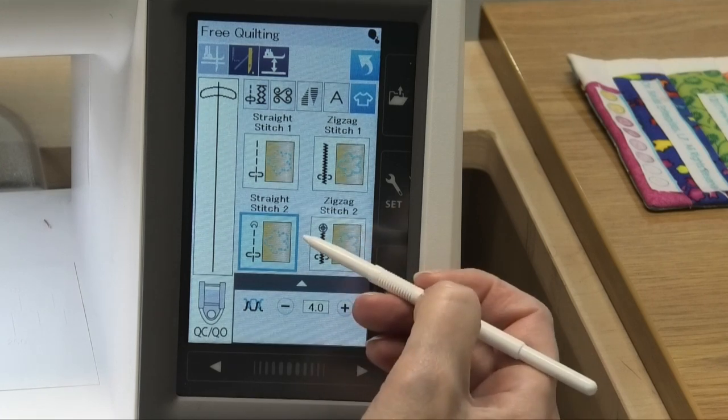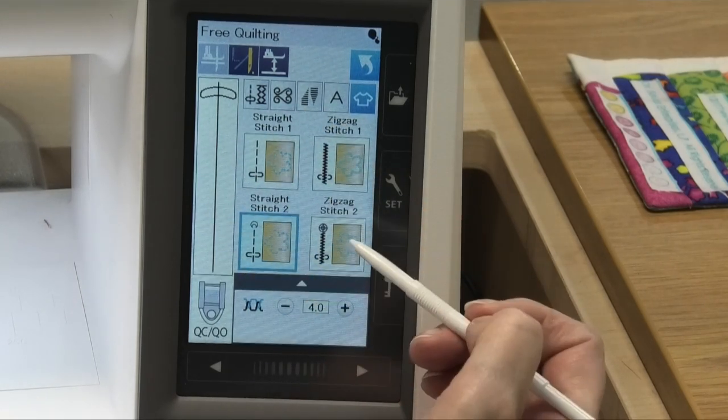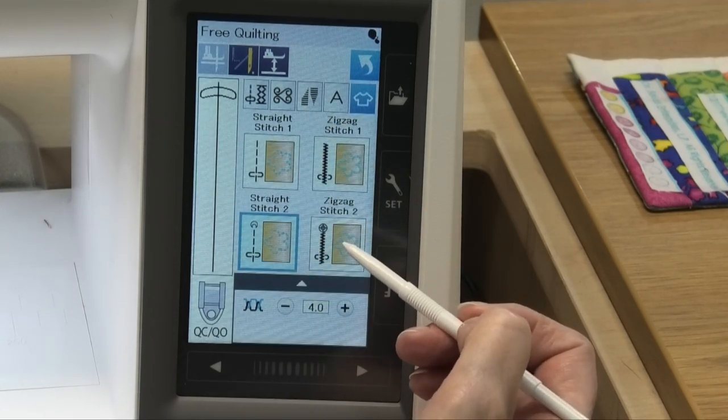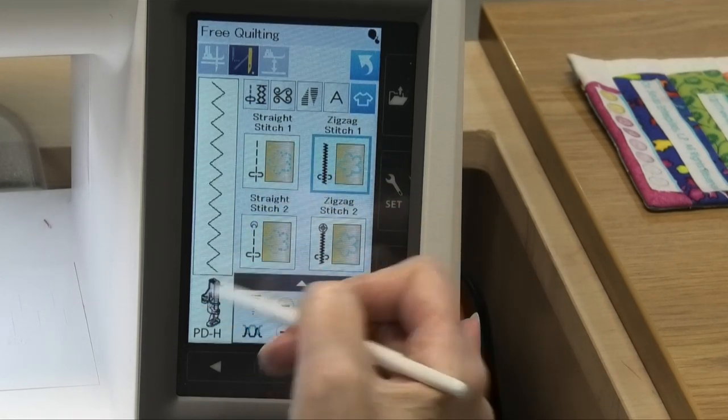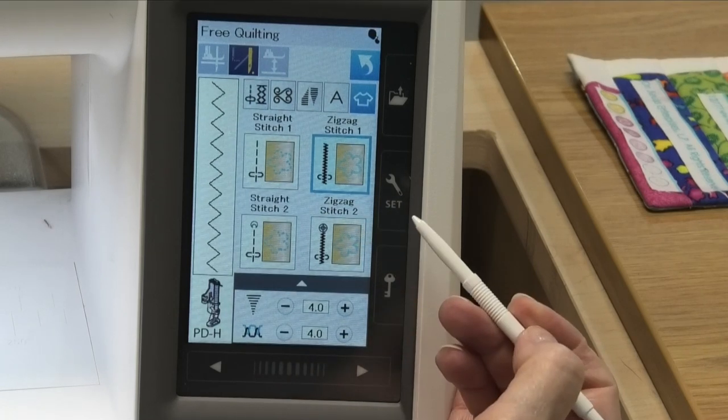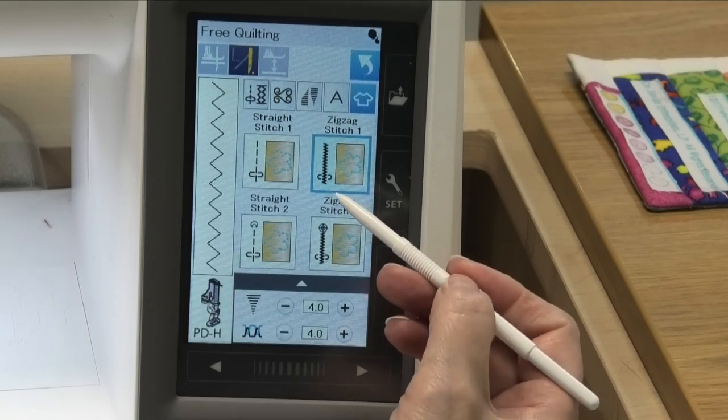Okay so that shows you in the free motion quilting area your various options. And you'll notice again when we come up into these areas here that you're still using that PDH foot. You can either use the open or closed one. It's your choice.